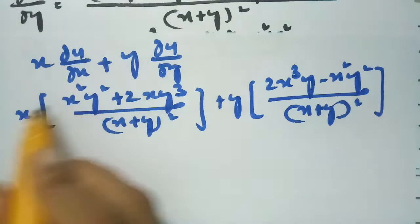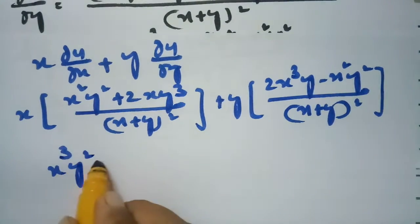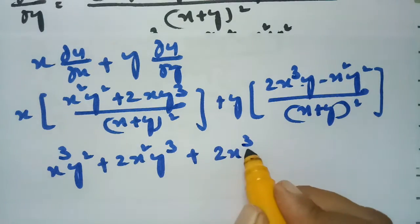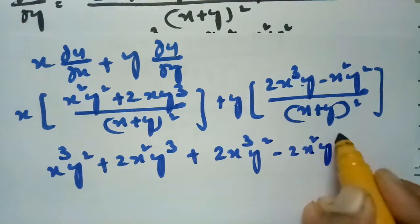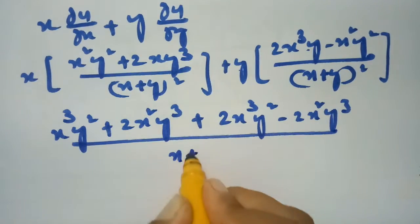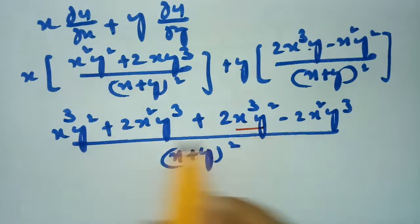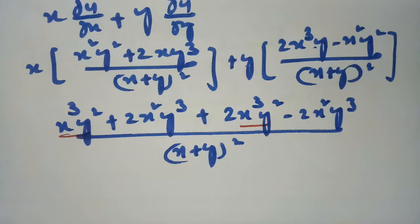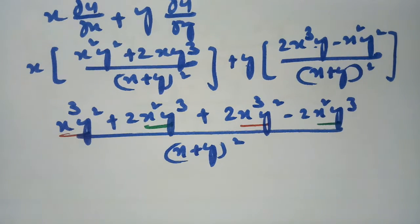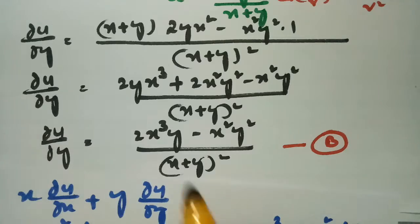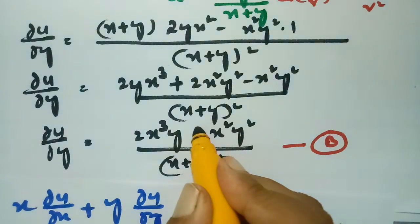Multiplying x into ∂u/∂x gives x³y² plus 2x²y³ in the numerator. Multiplying y into ∂u/∂y gives 2x³y² plus x²y³, all divided by (x+y) whole square. Observing the terms: x³y² appears twice giving 3x³y², and x²y³ appears twice giving 3x²y³.